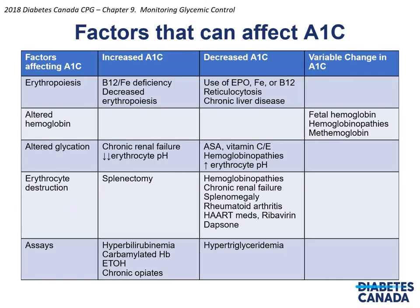When considering A1C with our individuals in terms of how they are doing for glycemic control, it is important that we understand there are factors that can affect their A1C levels. On this slide you can see a chart: the very left column shows factors that affect A1C in general, the second column shows factors specifically thought to increase A1C, the third column shows factors thought to decrease A1C levels, and the last column covers the concept of variable change in A1C. When assessing overall glycemic status, it is important to recognize that comorbid conditions, medications, or past medical history may mean you are not dealing with the true A1C on the lab report.